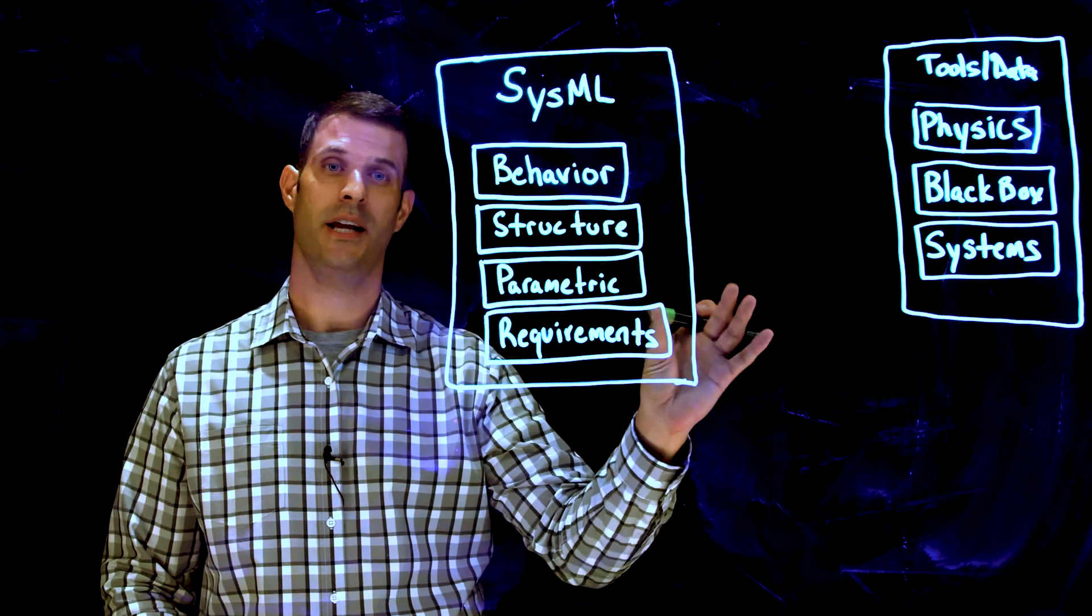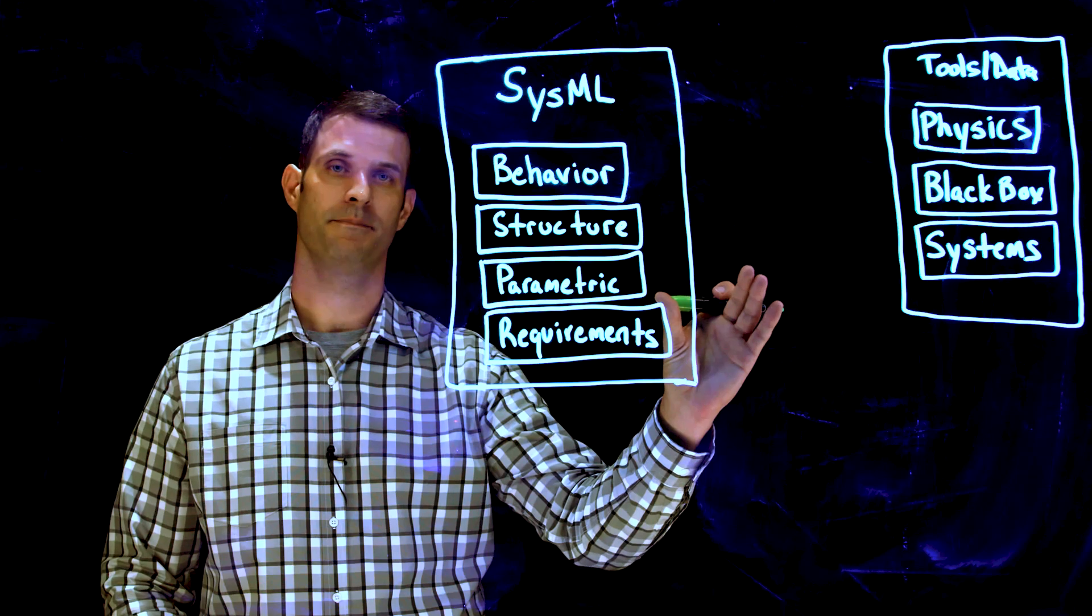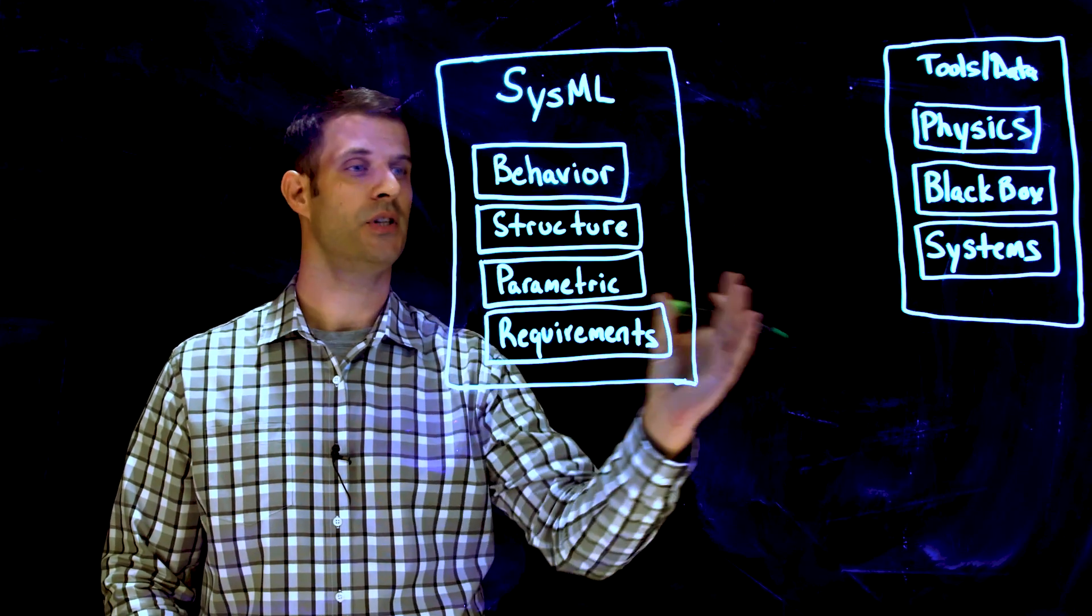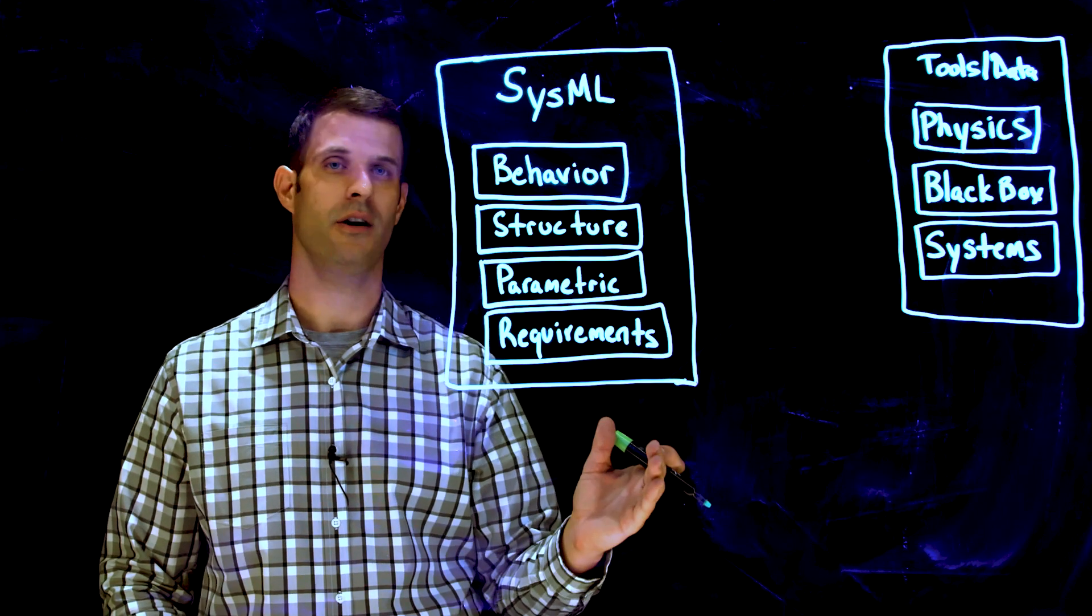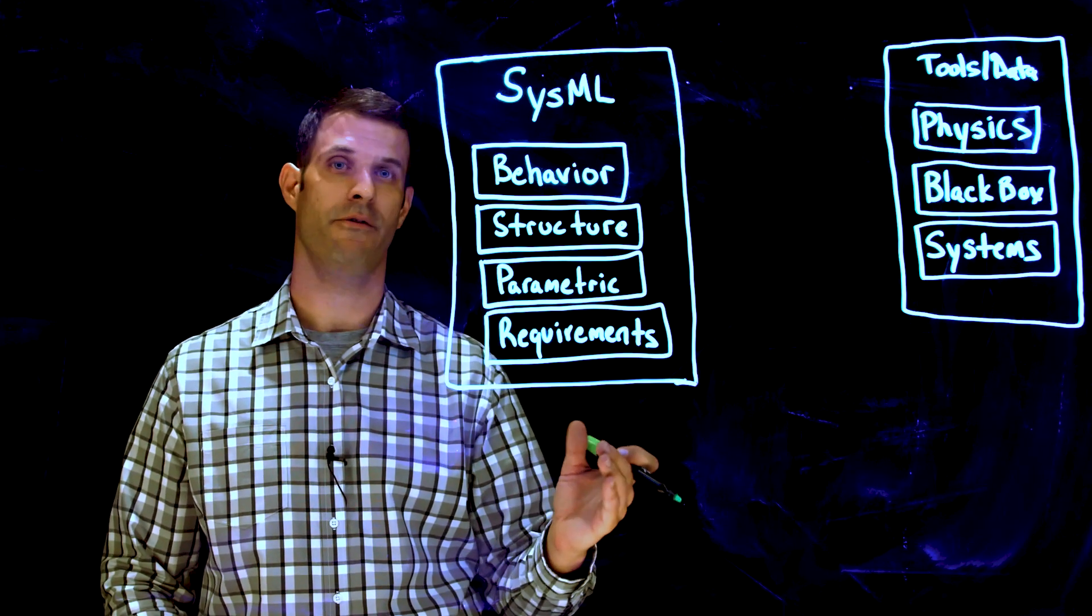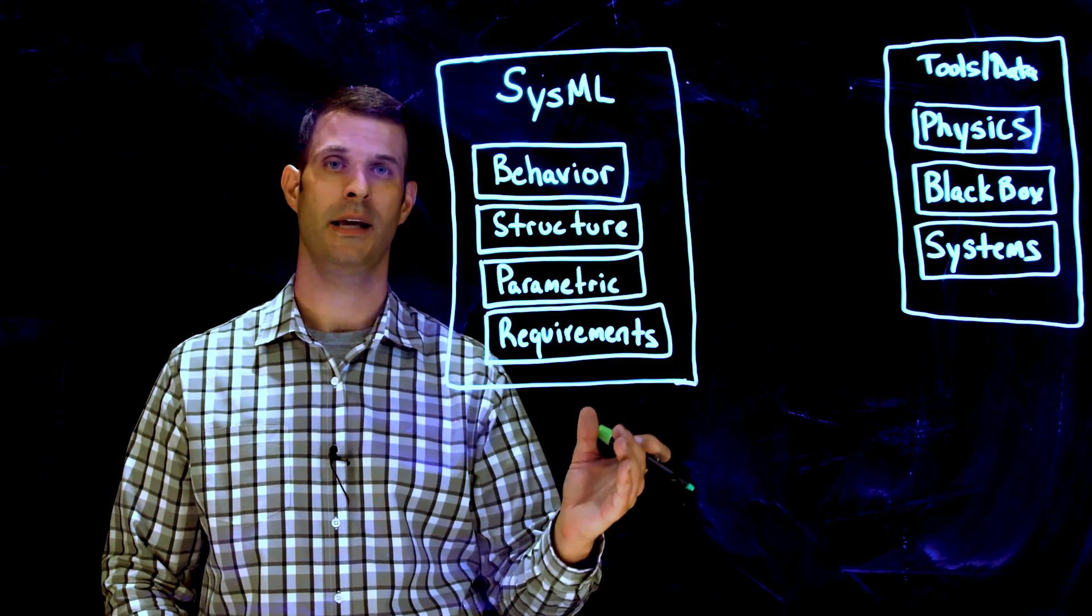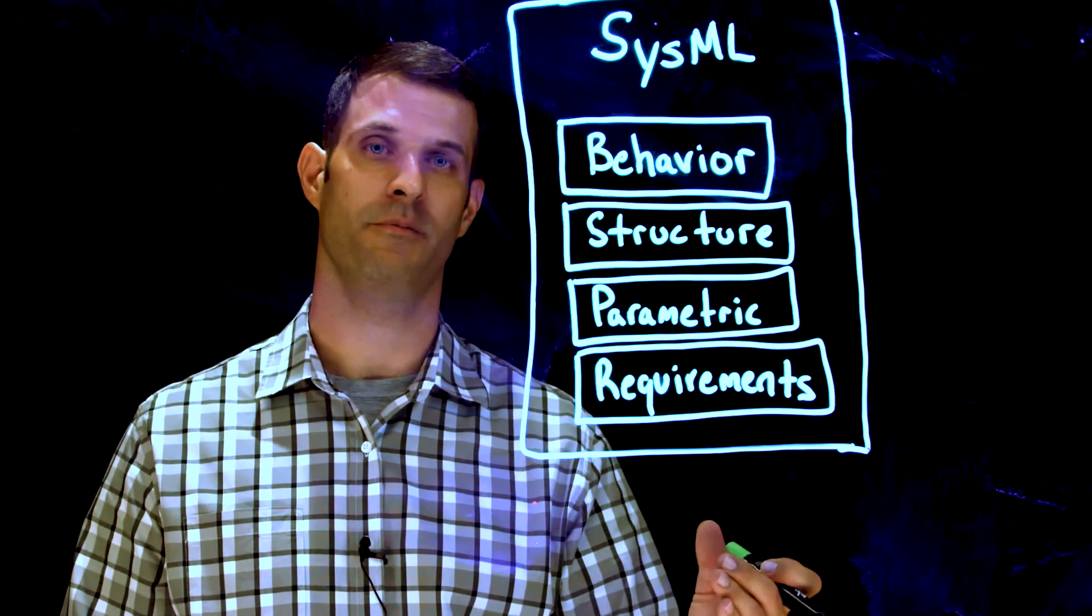As you can see, we have two rather disconnected aspects of the overall engineering effort. In reality, there might be substantial interaction that happens between players on both sides of this equation, but it's not automated. It's subject to dreaded fat finger errors that happen during translation, and it requires substantial manpower involvement.